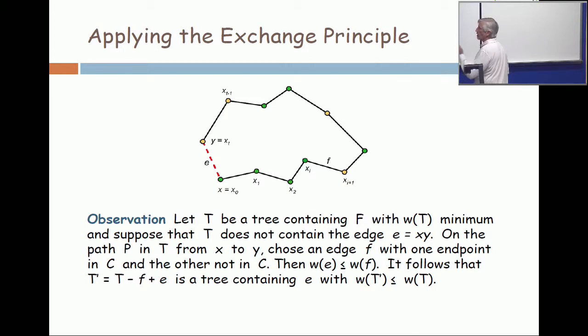And therefore, the exchange principle would say, take out F and put in E. But if it's tied, then you throw away your F, you put in E, and you're making your tree look more like Alice's. And you simply repeat this process until your tree looks identical to hers. And you said, look, I can transform mine into yours, and I never pay a penalty to do that.